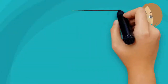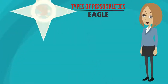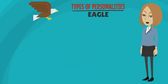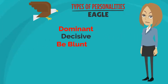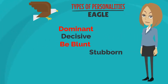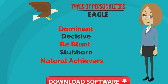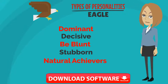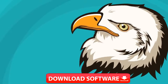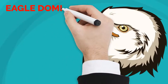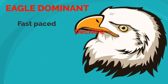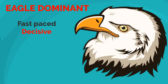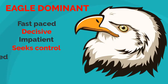Eagle personality traits: dominant, stimulated by challenges, decisive and direct. They can be blunt or stubborn and may lose sight of the big picture or be insensitive to others' needs. They are natural achievers — fast-paced, decisive, impatient, seeking control, goal-oriented, and competitive.